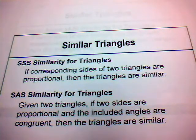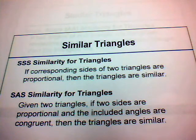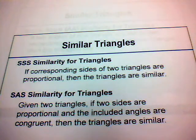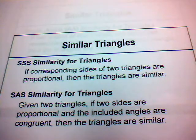There are a couple of similar triangle theorems. One is SSS similarity, another is SAS similarity, and the third is AA similarity. The SSS similarity states: if corresponding sides of two triangles are proportional, then the triangles are similar.